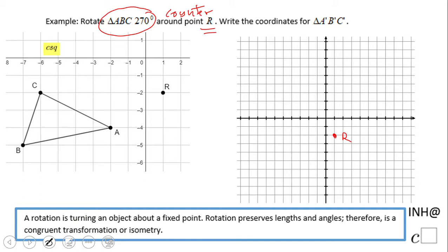First of all, let's think about it. We know it is 270 degrees, right? So from this side that will be 90, 180. It should be somewhere here. Okay, so how we're going to do that?